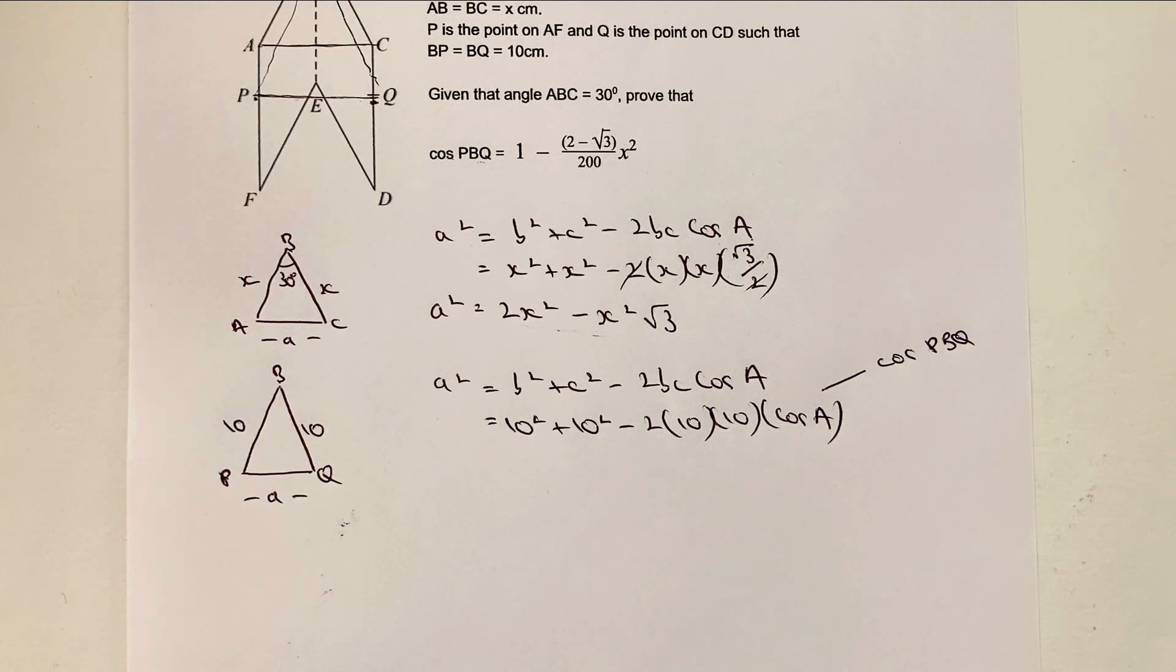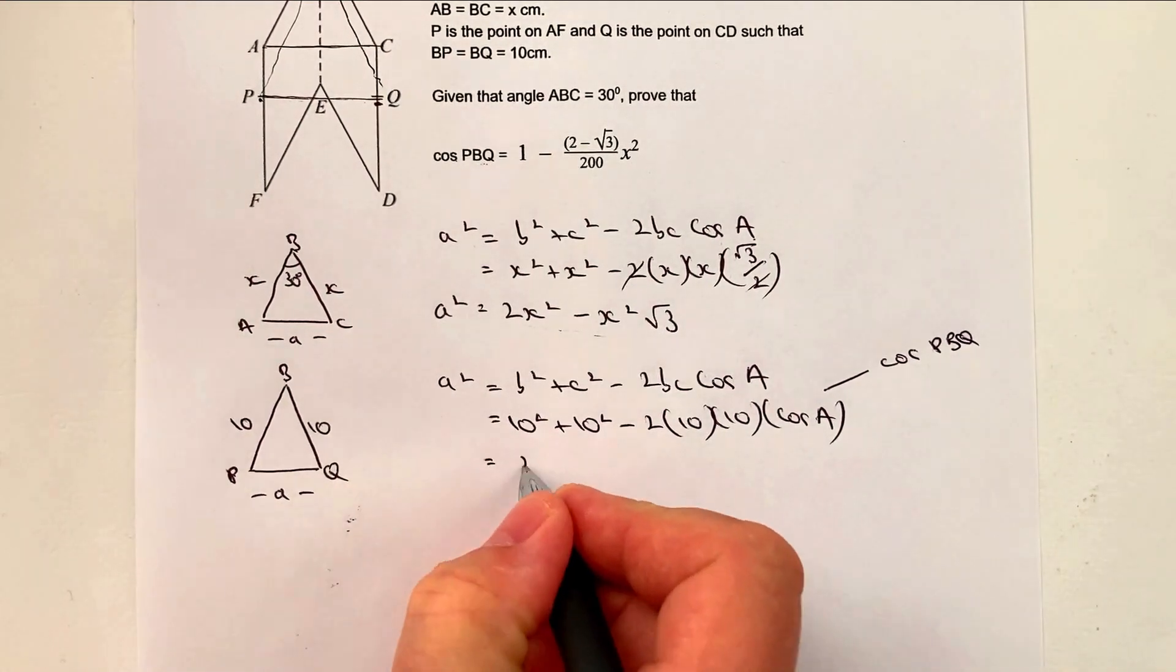Okay, so the next stage really is to tidy this up, just make it look a little bit neater. Okay, well, I've got 10 squared, which is 100 plus 100. So that's going to be 200.